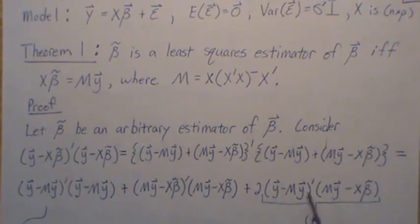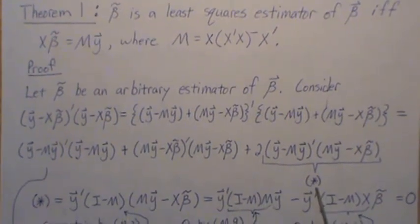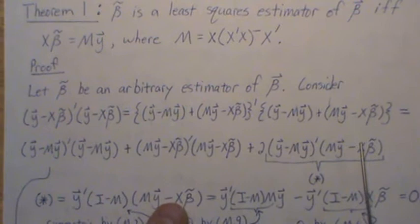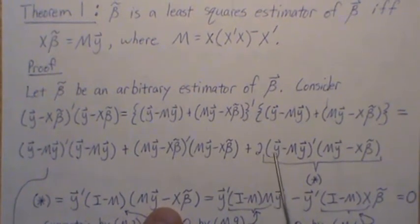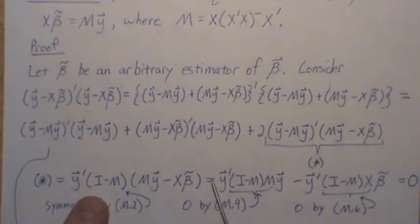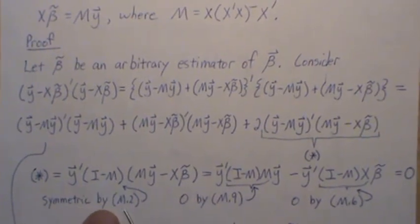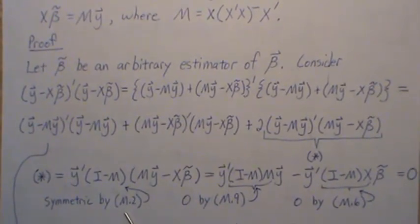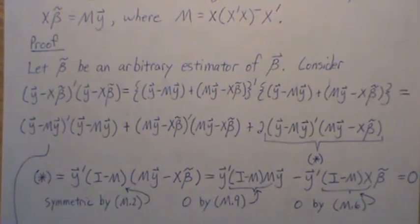Now let's look at this cross product piece right here. Let's call it star. So this piece here we bring straight down. Now here we left factor out y and then we distribute the transpose and we get this piece here, but i minus m is symmetric and that's by property m2, which was in the second video. And i minus m was the perpendicular projection matrix onto the orthogonal complement of the column space of x.